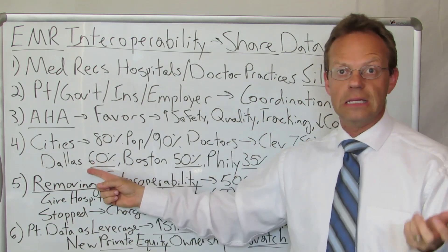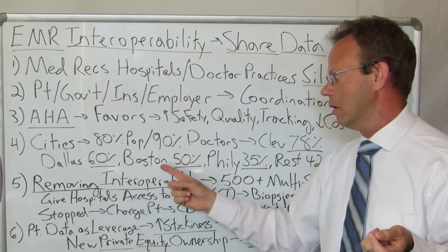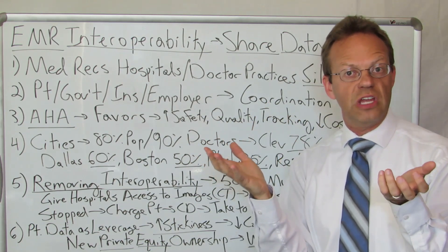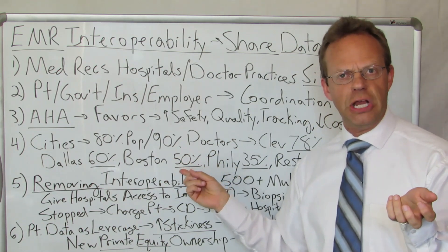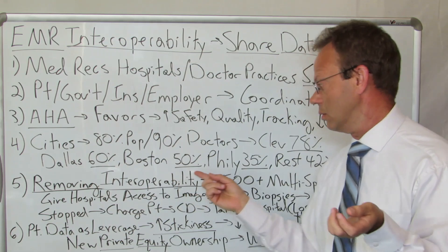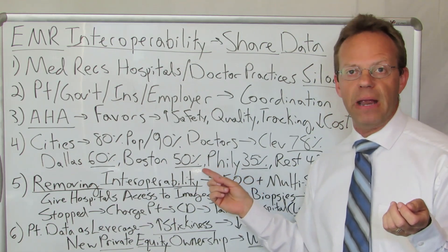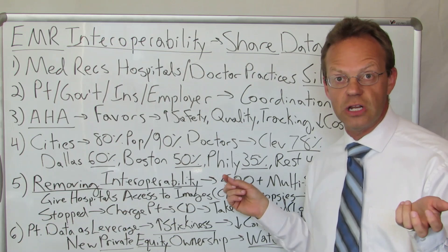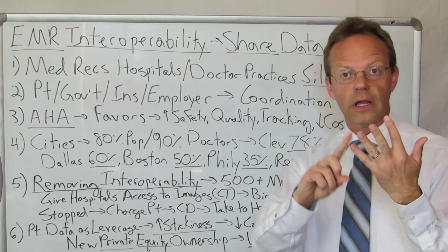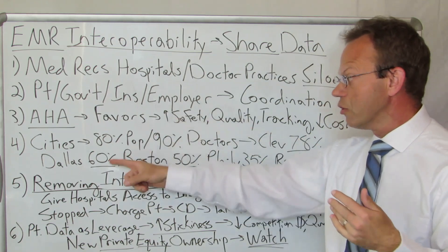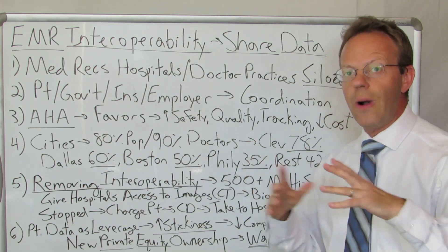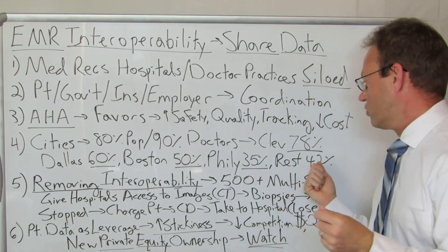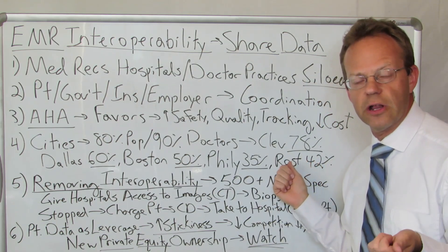Dallas came in at 60%. Boston at 50% — Boston, the city with some of the most famous hospital systems in the world, and only half of them share any data with each other. Philadelphia is at the bottom of the barrel for major U.S. cities — only 35%, only a third of the hospitals in Philadelphia share information. New York, Los Angeles, and other major cities fall in between Cleveland and Philadelphia. Outside of the 15 largest cities, the rest of major cities in America sit at about 42% of hospitals sharing healthcare information.